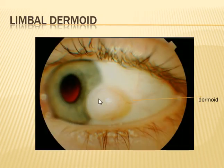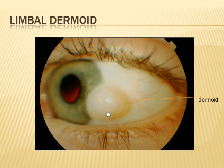Here you can see a nodular elevation of the limbus with no surrounding blood vessels, congestion, or inflammation — there are no signs of inflammation. This is a limbal dermoid, which is congenital. It needs excision only when it is affecting vision or causing problems.